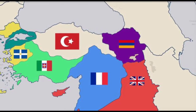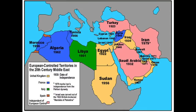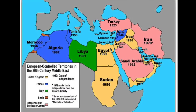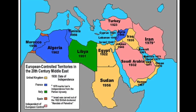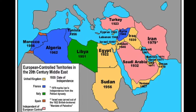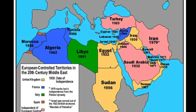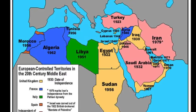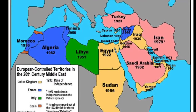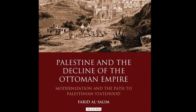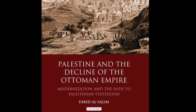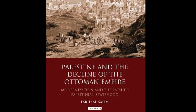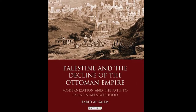Resistance to the influence of these powers came from the Turkish national movement but did not become widespread in the other post-Ottoman states until the period of rapid decolonization after World War II.